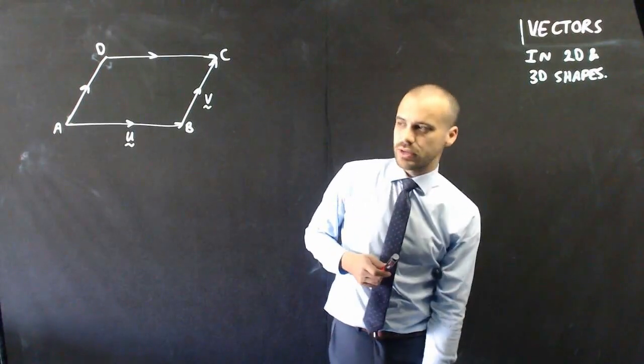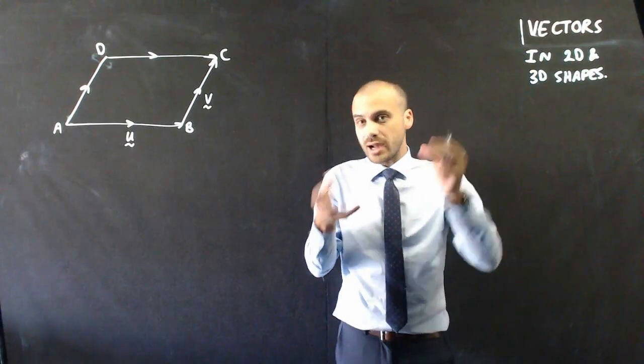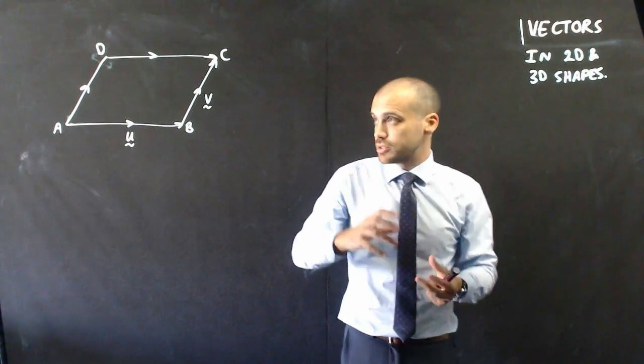I just want to look at vectors in some 2D and 3D shapes based on what you already know about them and how you're adding them together graphically.